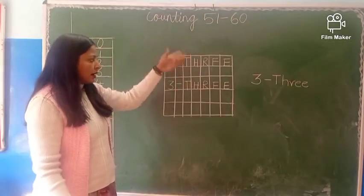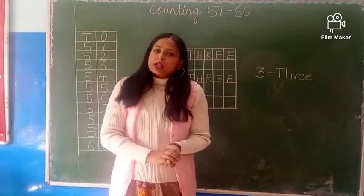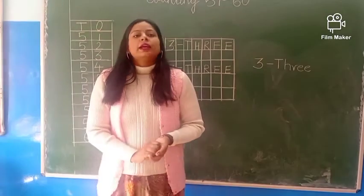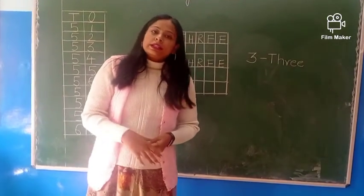So you will write 3 for the whole page, one line skip. And 51 to 60 counting karenge. And number workbook me you will write 1 to 50. So this is your work. Now we will meet in next video. Till then, bye-bye.